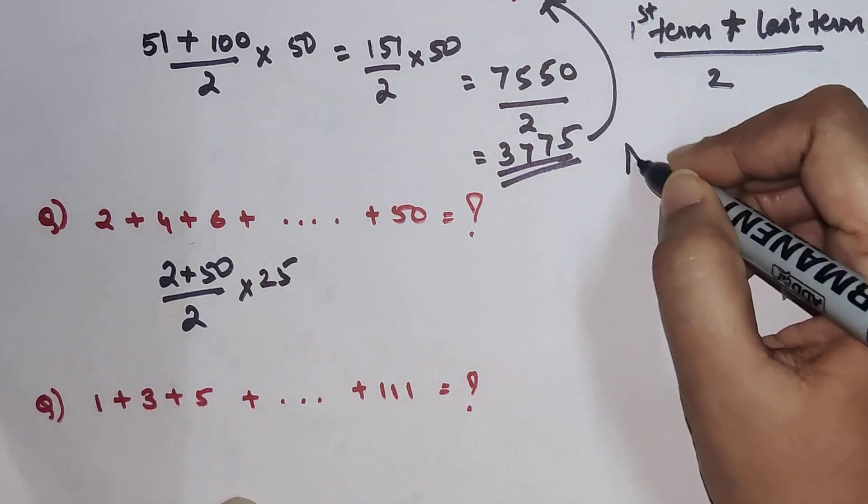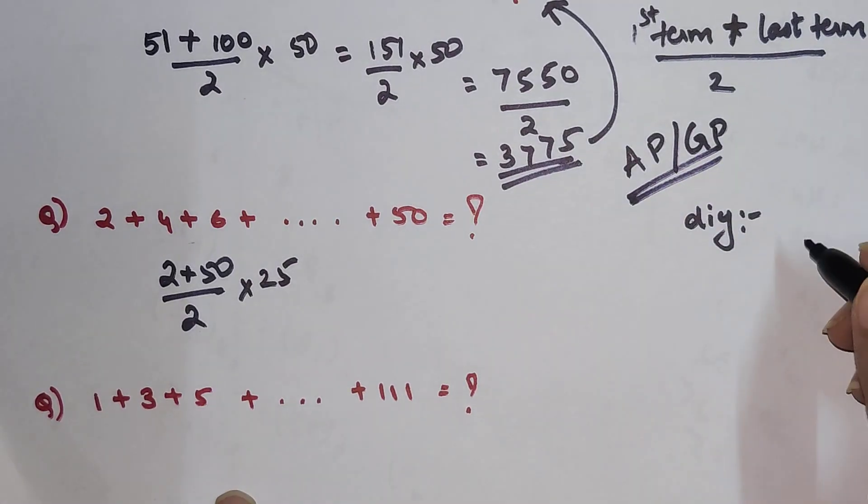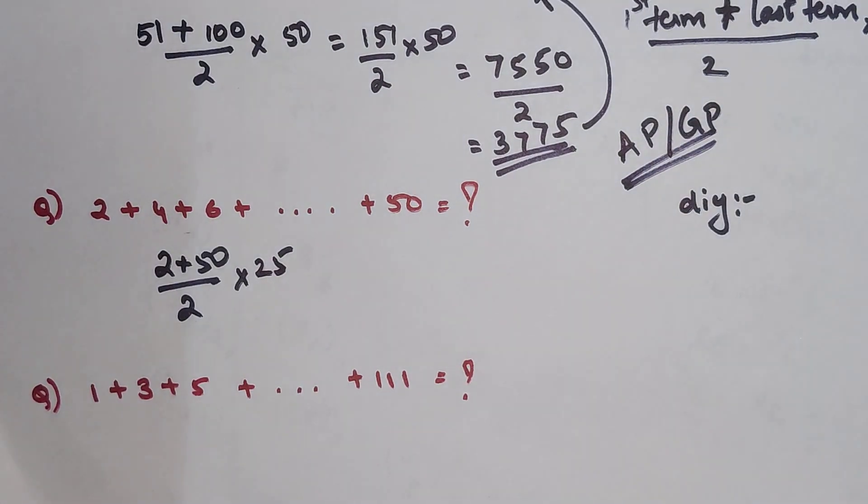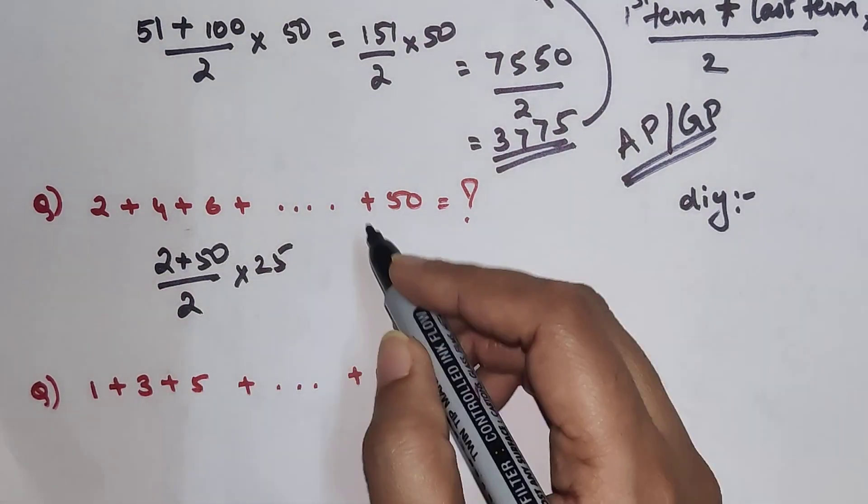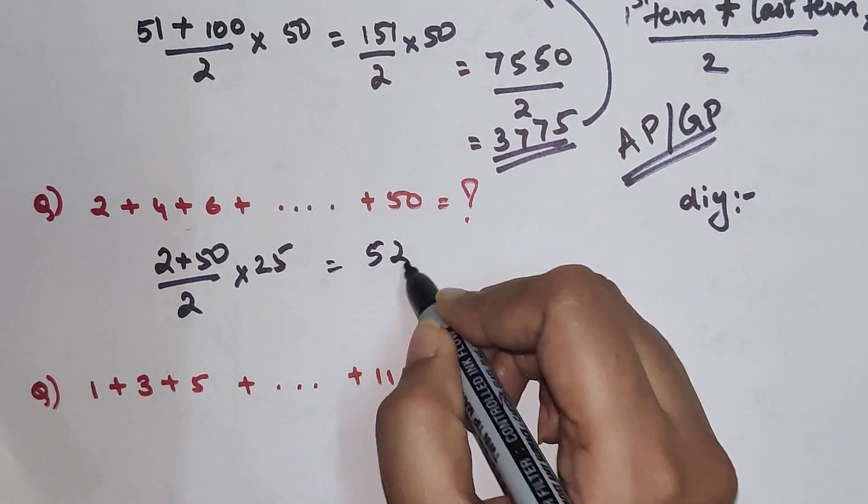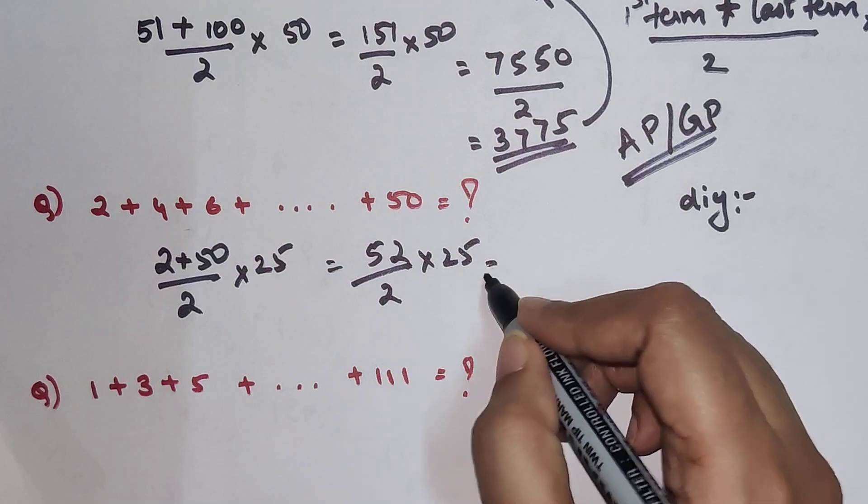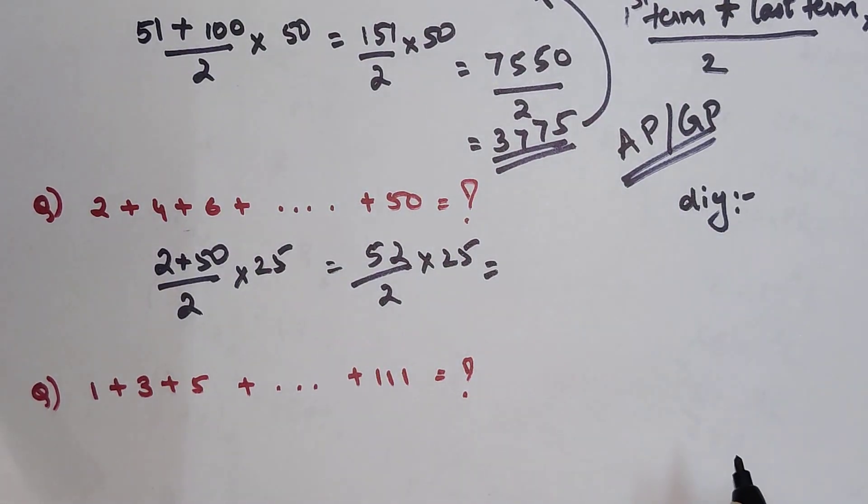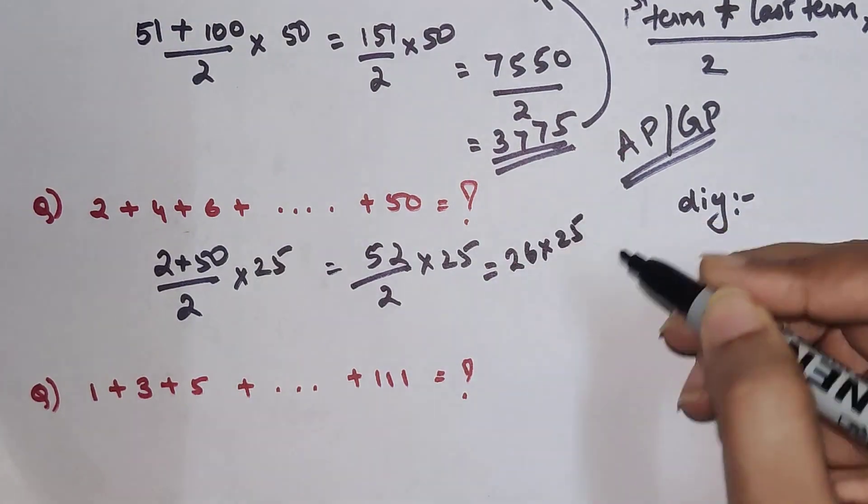Now we have 2 plus 50, which is 52, divided by 2 times 25. This comes out to be 26 times 25.